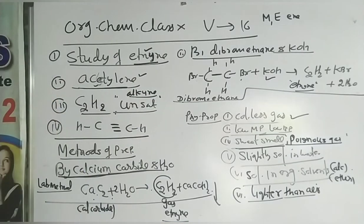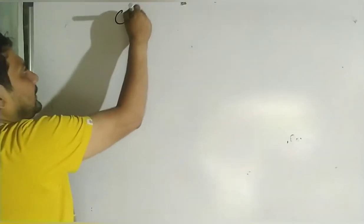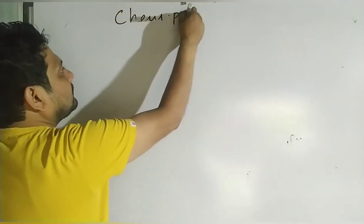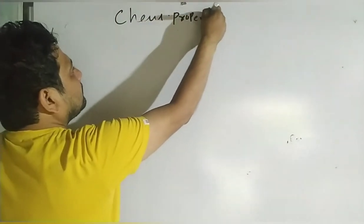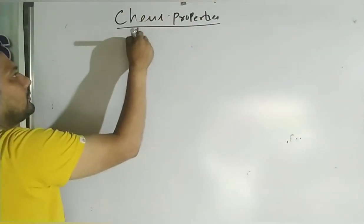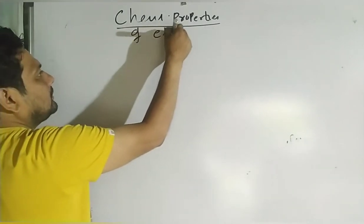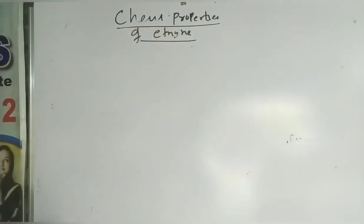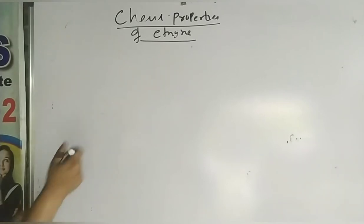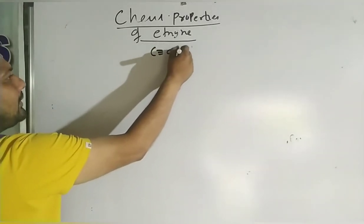These are the physical properties. Now let us look at the chemical properties. The name of ethyne is acetylene. It has a triple bond, so everyone knows it will be more reactive than ethane or ethene.